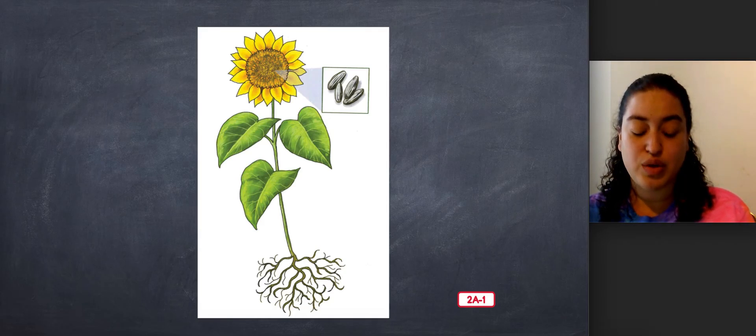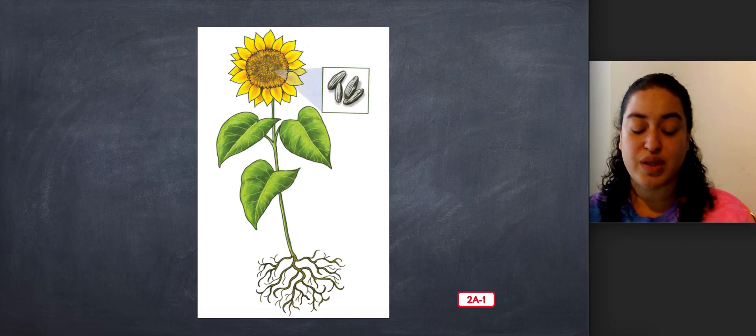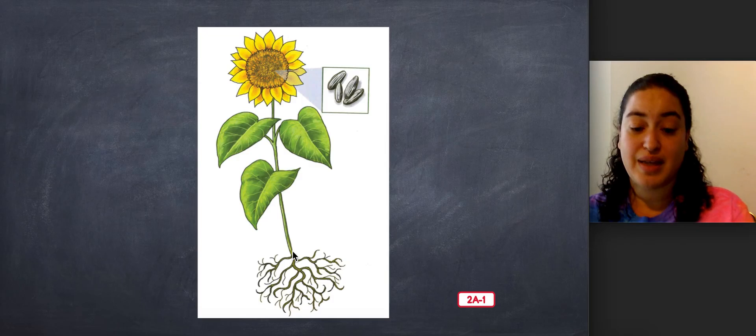The water and nutrients move through the roots up into the stem of the plant, which is this part of the plant, which holds the plant up tall toward the light. As the water and nutrients travel up the stem, they are able to reach other parts of the plant,